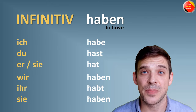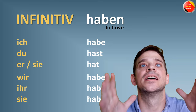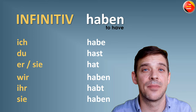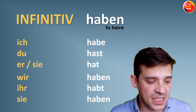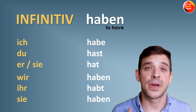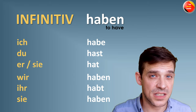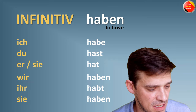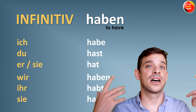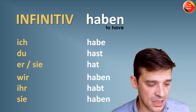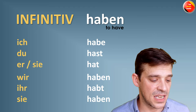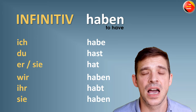Next verb is HABEN. Again, it is so important — you need to know it anytime. HABEN is also irregular. Let's conjugate together: ich habe, du hast, er/sie hat, wir haben, ihr habt, sie haben.